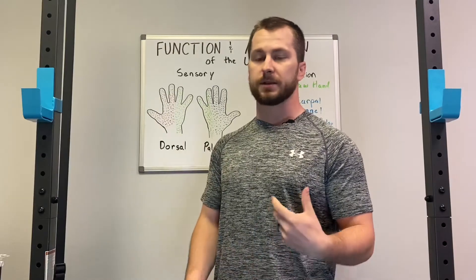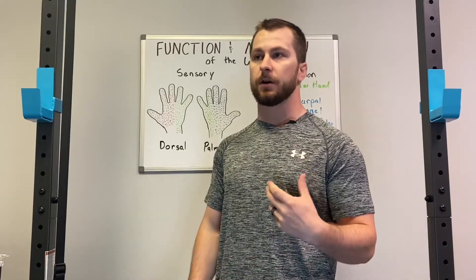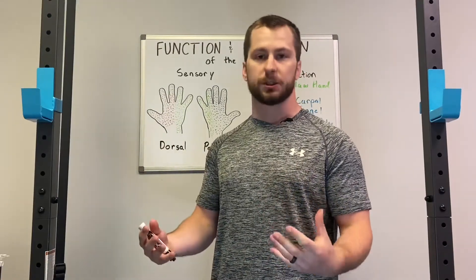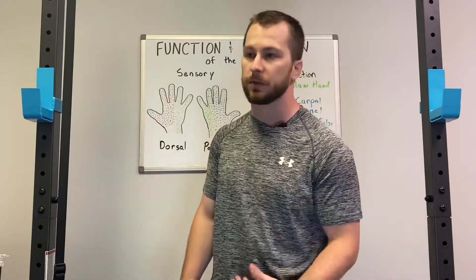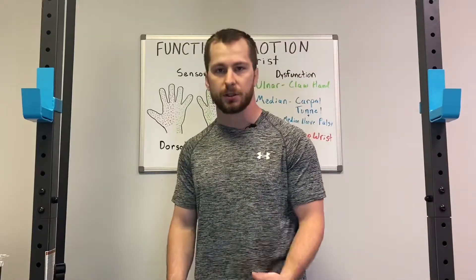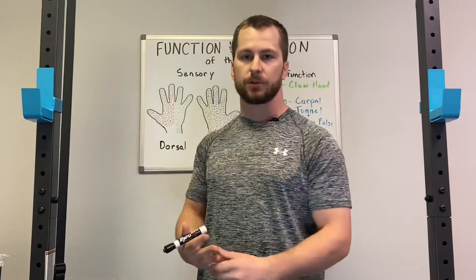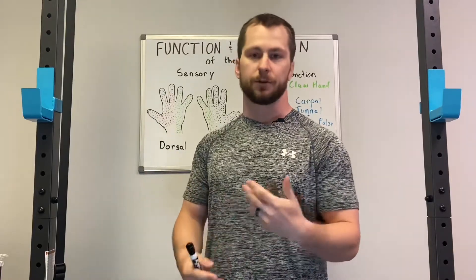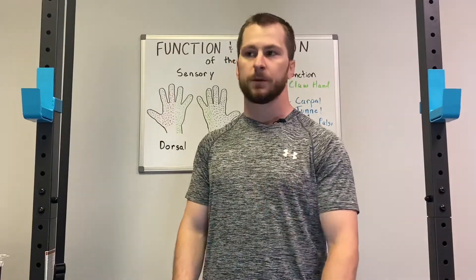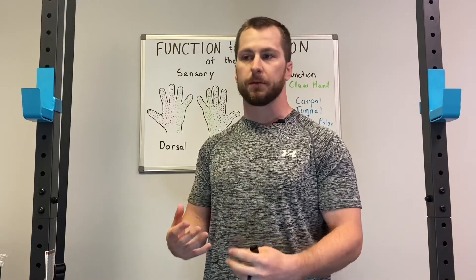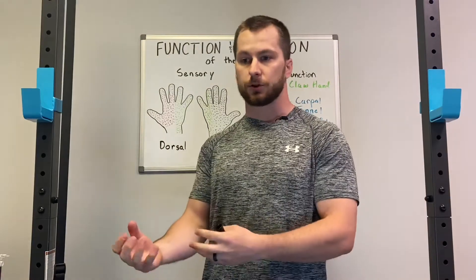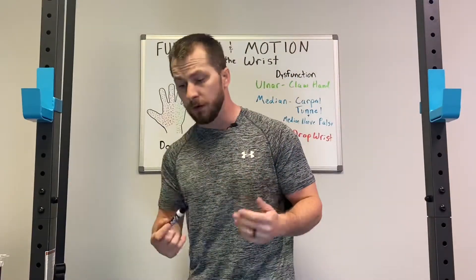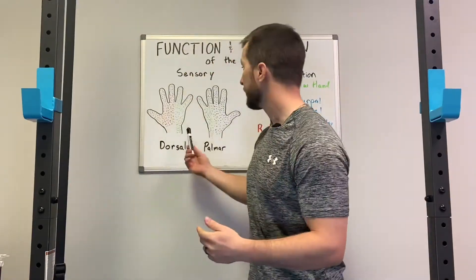These nerves basically give us sensory and motor function in our hands and wrists. Sensory is incoming information — tactile touch, feel, temperature, things like that — whereas motor is our ability to control and move the muscles.